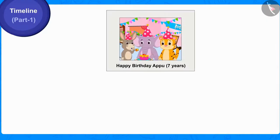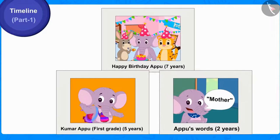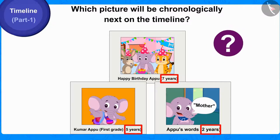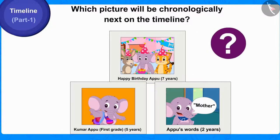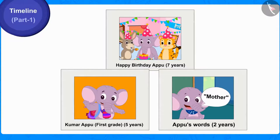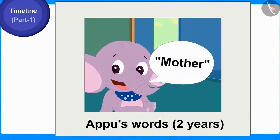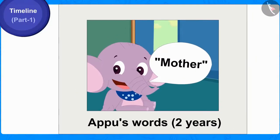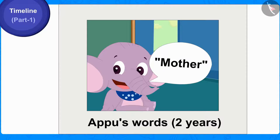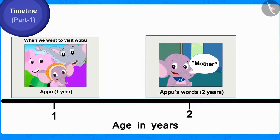Now, can you tell out of these pictures, the age of which picture will be chronologically next on the timeline? Well done children, you have found the correct answer. This picture in which Appu was two years old will be shown chronologically next on the timeline by writing two years on it.